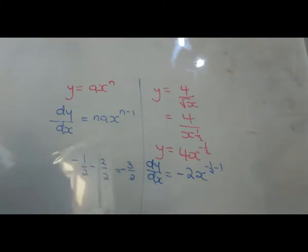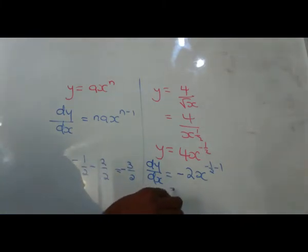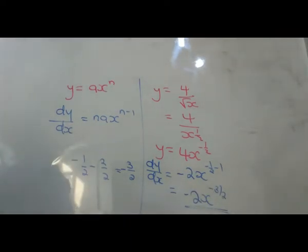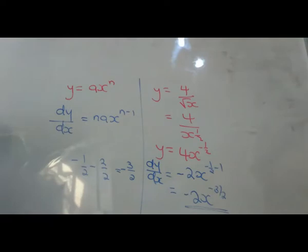So this will give you minus 1 minus 2, you get minus 3 over 2. So the final answer is minus 2x to the power of minus 3 over 2. That is the answer, so everything is coming from this formula or this method.